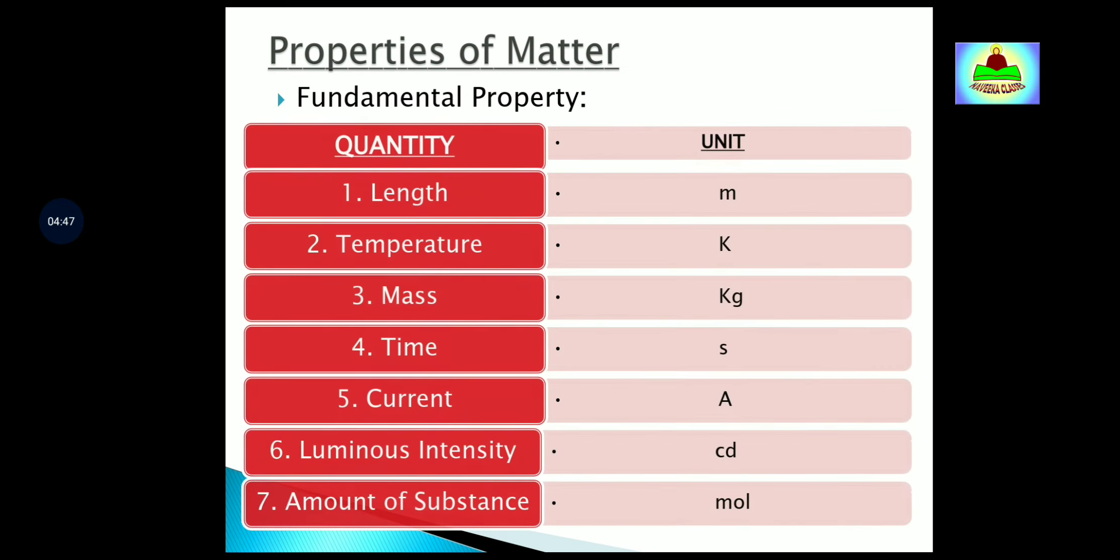Now next is properties of matter. We will discuss here the fundamental property of matter. What are fundamental properties? The properties which matter has on its own are called fundamental properties. As you can see here, we will write seven properties of matter. These are length, temperature, mass, time, current, luminous intensity, and amount of substance. On the right-hand side, we will write their SI units.